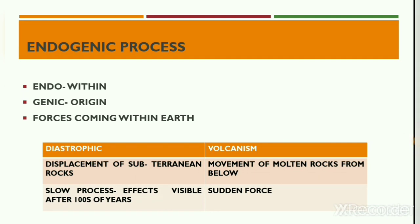Endogenic processes are those geomorphic processes that originate in the deep interior of the earth. The word endogenic has been derived from two words — endo and genic — which mean within and origin respectively. On the basis of materials, the endogenic processes are of two types: diastrophic process (diastrophism) and volcanism.